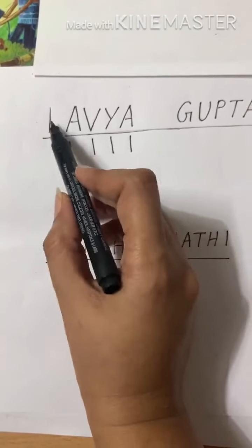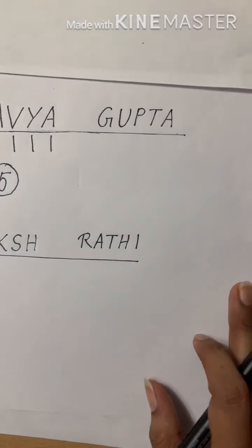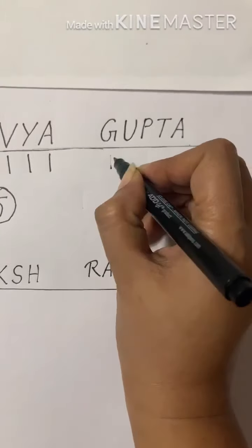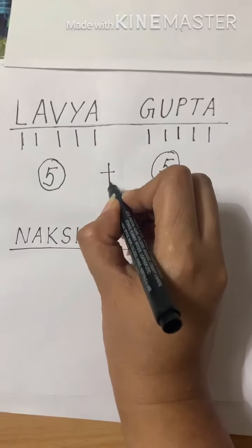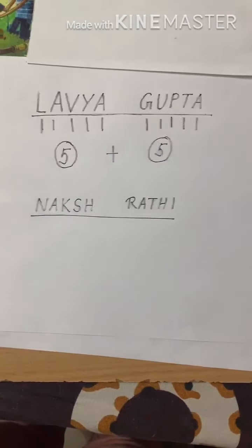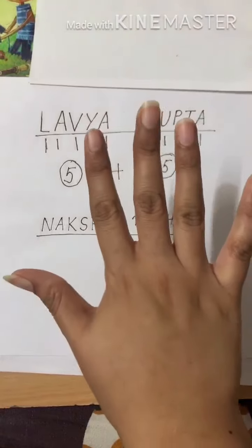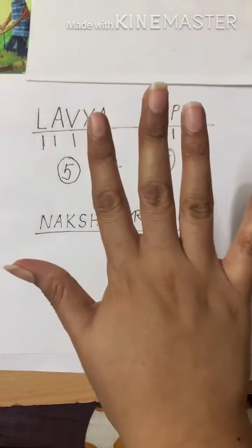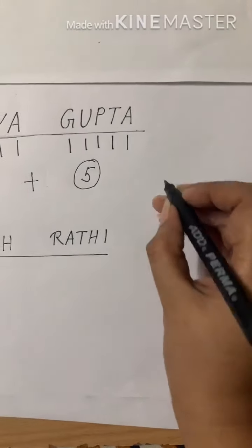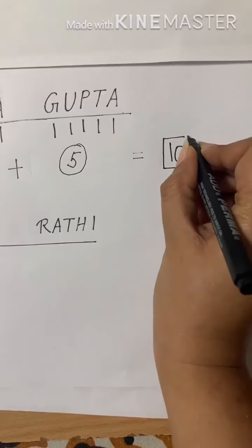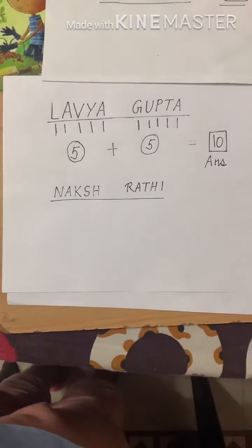I am counting each and every alphabet: L, A, V, Y, A — 5 letters. Now let's count how many letters are there in Gupta: 1, 2, 3, 4, 5. Again we have got 5. So what is the name number for Lavyaa Gupta? We will add 5 and 5. Keep 5 in the mind and put up 5 fingers, then count after 5: 6, 7, 8, 9, 10. So I got 10. The name number for Lavyaa Gupta is 10.